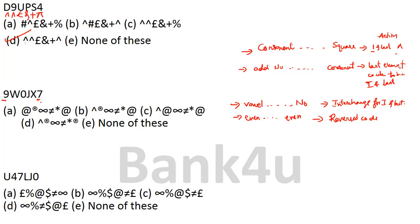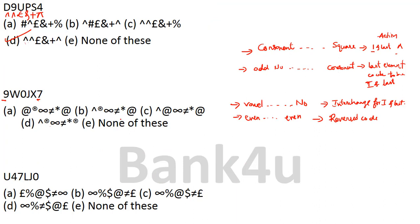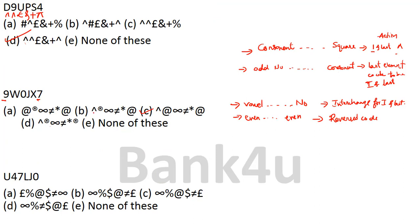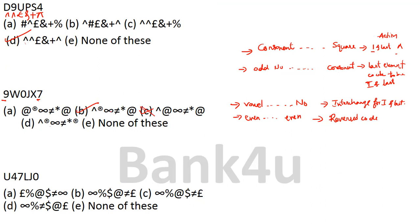Coding 9WOJX7 normally: 9 is cap, W is its sign (R), O is infinity, J is not-equal-to, X is star, and 7 is at-the-rate. So the final code is: cap, R, infinity, not-equal-to, star, at-the-rate. Therefore Option B is the answer.